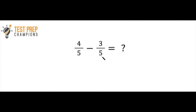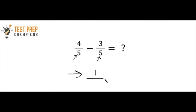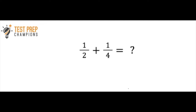Again, before we add or subtract we check if we have a common denominator. Four-fifths has five in the denominator, and three-fifths also has five in the denominator. So all we have to do is subtract: four minus three equals one, and we keep the same denominator. The answer is one-fifth. Let's try to stay in fractions throughout the whole video — no need to work in decimals.